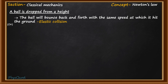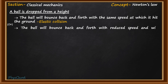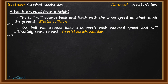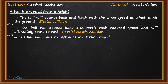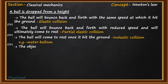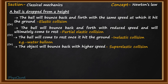Another possibility is where the ball will come to rest once it hits the ground — this situation is a completely inelastic collision. An example can be a water balloon hitting the ground. Or there can be another possibility where the ball will bounce back with a higher speed, which is called a super-elastic collision. An example is when a cracker hits the ground with some strong force.